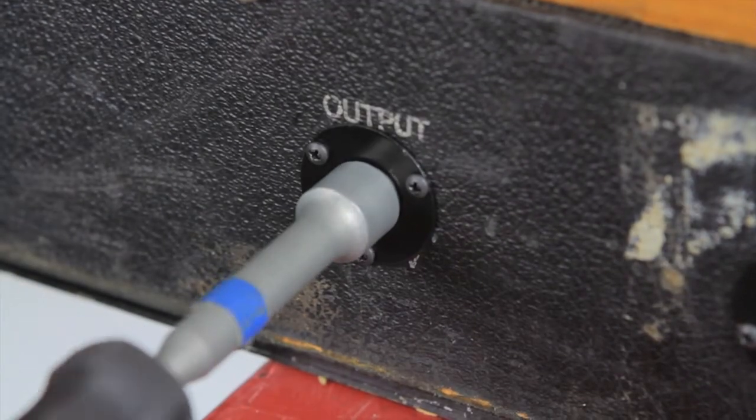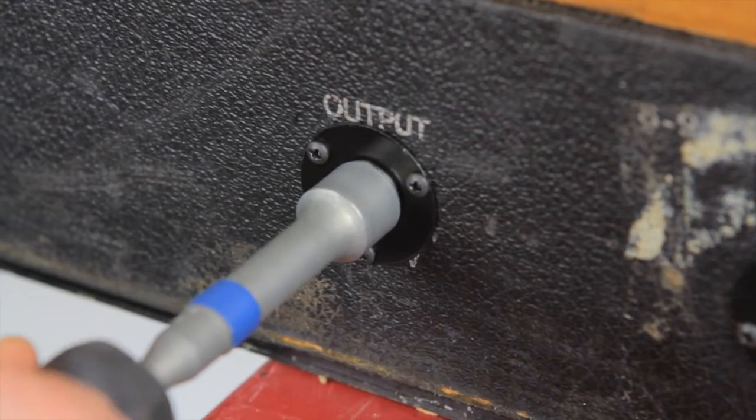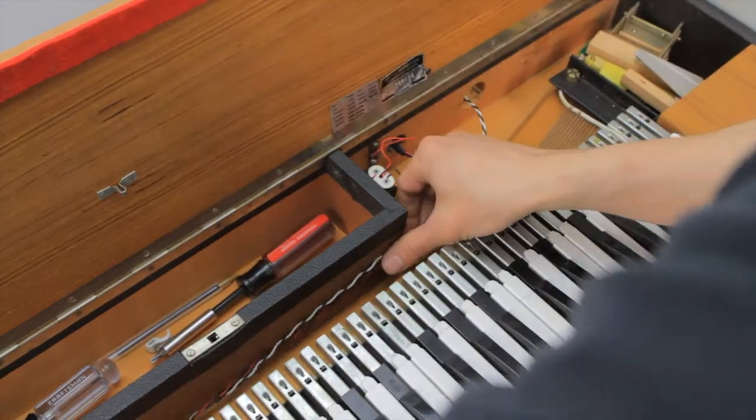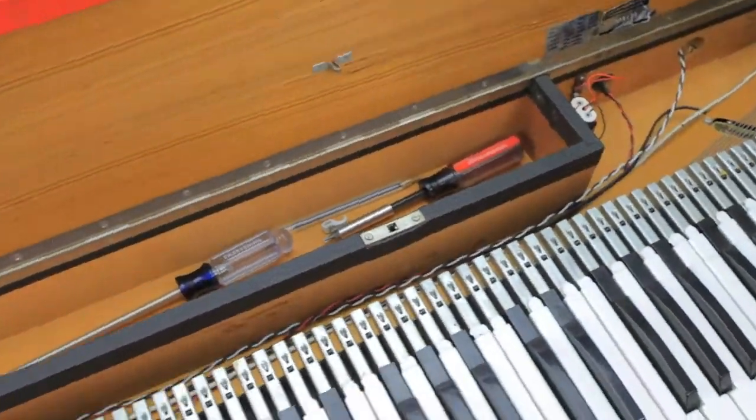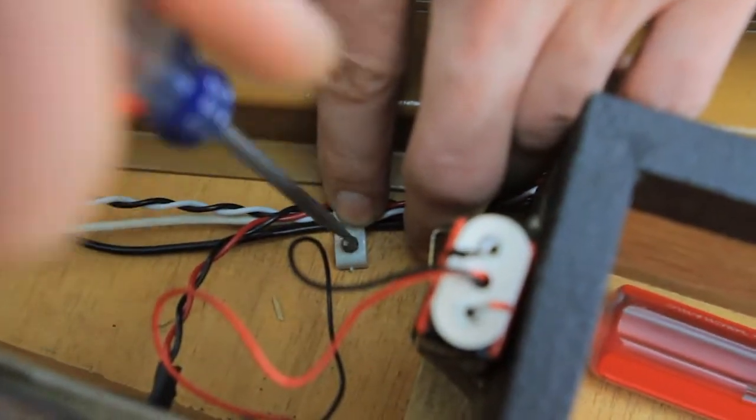Use a half inch nut driver to tighten the nut while holding the jack from the inside. Neatly arrange the power, output, and pickup wires in the base, and secure them in place with the mounting clamps removed earlier.